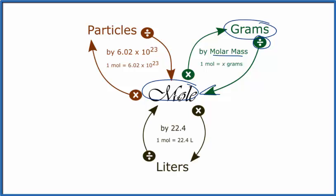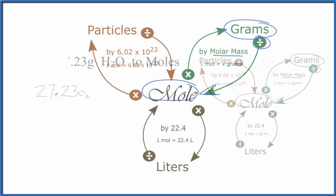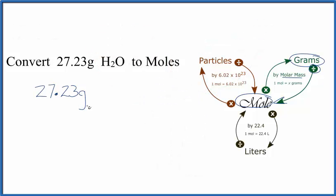So we have 27.23 grams of water, and the molar mass for water is 18.02, and the units are grams per mole. If you need help calculating that, there's a link in the description for how to get the molar mass for water.